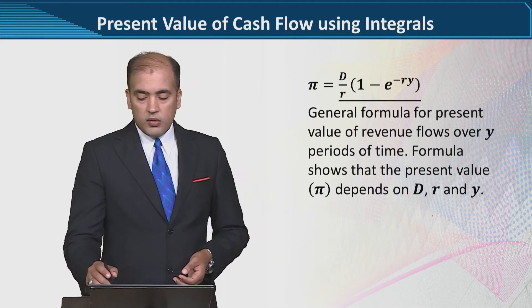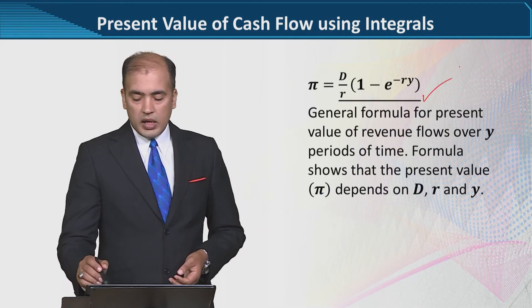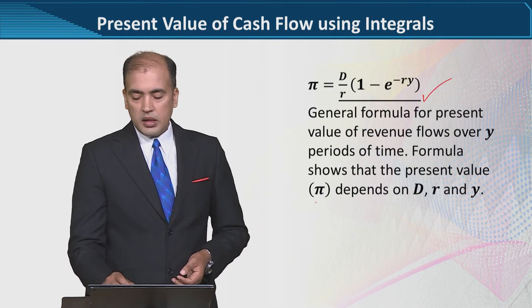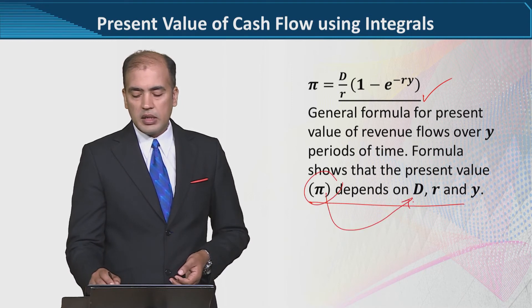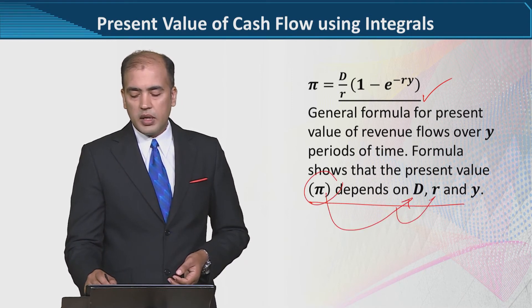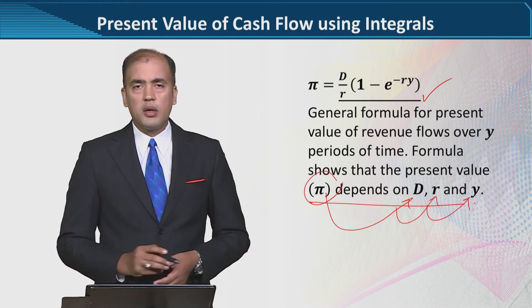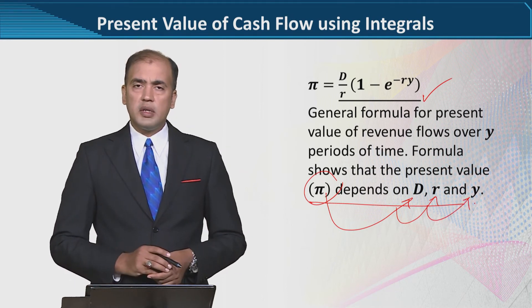This is the formula we are discussing, which tells us that the present value depends on annual revenues, the rate of discounting, and the number of years.